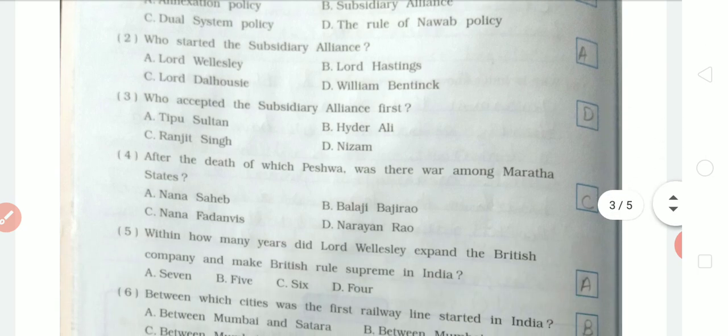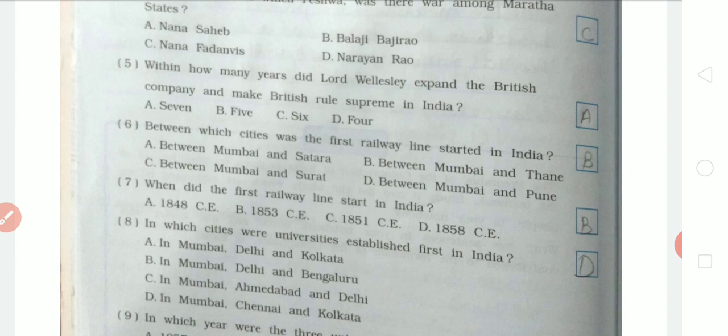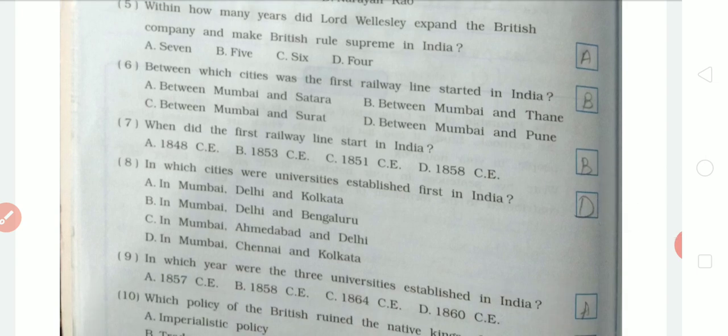Fourth question: after the death of which Peshwa was there war among the Maratha states? Fifth question: within how many years did Lord Wellesley expand the British company and make British rule supreme in India? The answer is 7 years. Sixth question: between which cities was the first railway line started in India? Seventh question: when did the first railway line start in India? The answer is 1853.